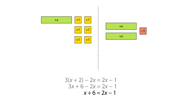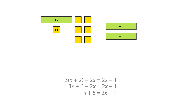We can remove the unwanted number on the right hand side by adding one to both sides, creating another zero pair. Let's remove these two tiles as they equate to zero. We can now write a new equation step.